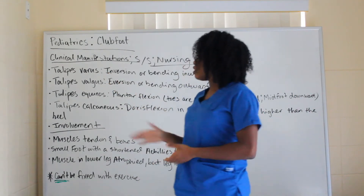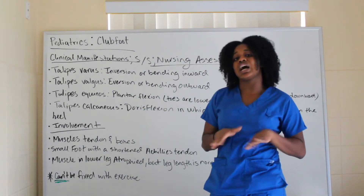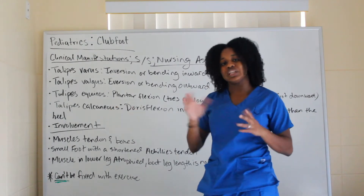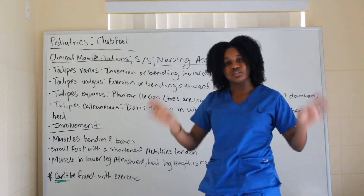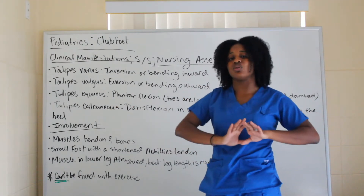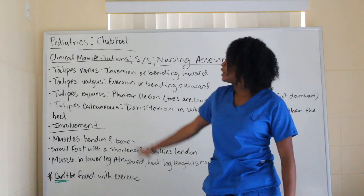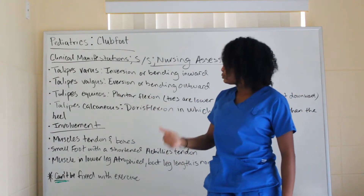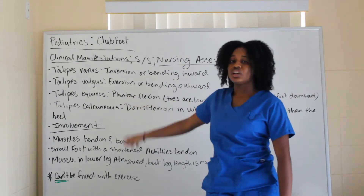Talipes valgus is eversion or bending outward of the foot — think 'E' for external, going outward. Talipes equinus is plantar flexion, where the toes are lower than the heel and the midfoot is pointing downward.